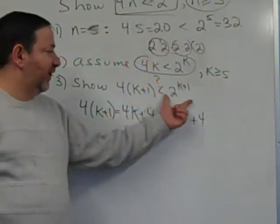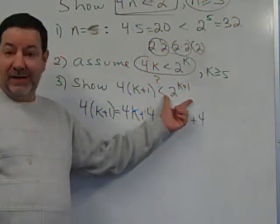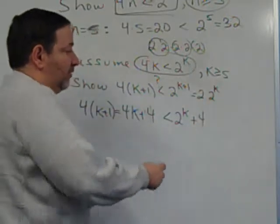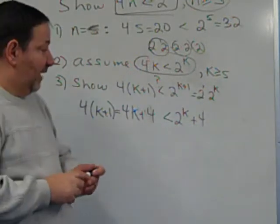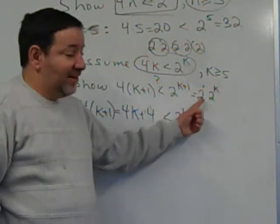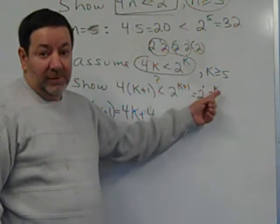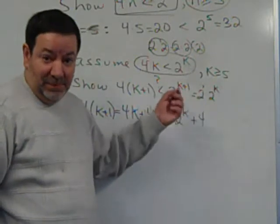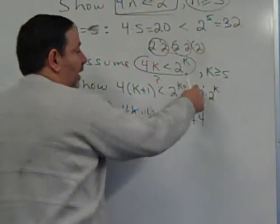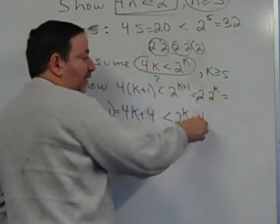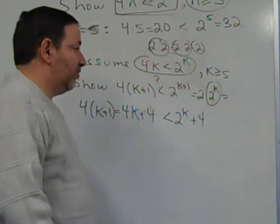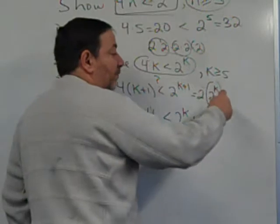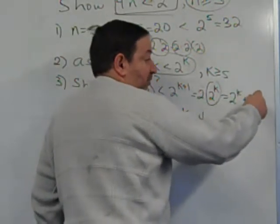Sometimes you should think about other ways of looking at 2 to the k plus 1. For example, it's 2 times 2 to the k. Remember, there's an understood 1 in the exponent for 2. In multiplication, if the bases are the same, you add the exponents: 1 plus k gives k plus 1, keeping the same base. When you multiply something by itself 2 times, that's the same as adding it to itself 2 times.